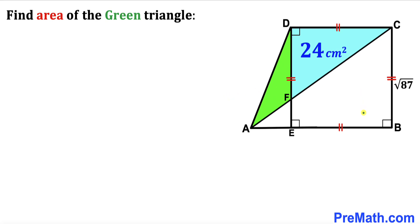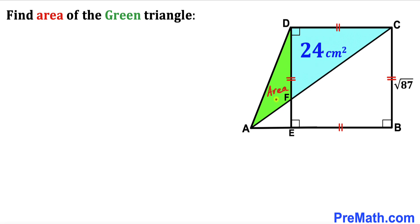Welcome to pre-math. In this video we have got square EBCD along with right triangle AED put together, as you can see in this diagram. The side length of this square is square root of 87 centimeters. The area of this blue right triangle FDC is 24 centimeters square, and our task is to calculate the area of this green shaded triangle AFD.